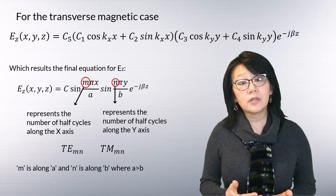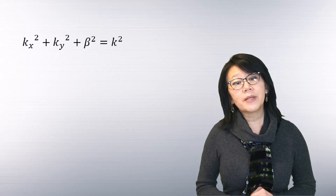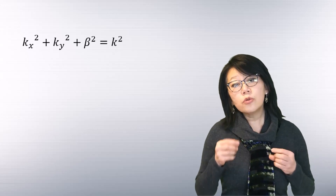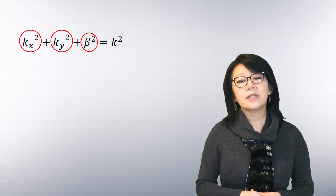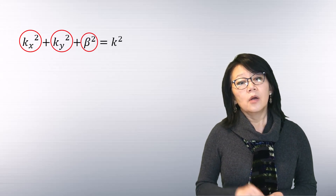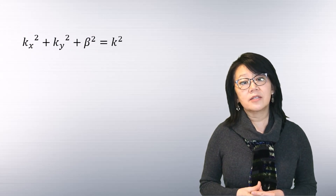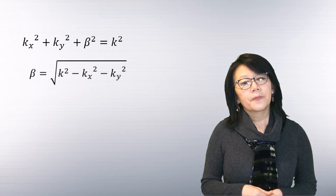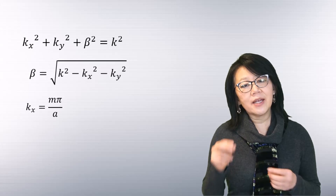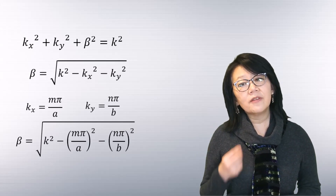The normal convention is to use the mode number along the larger dimension first, followed by the mode number along the smaller dimension. Recalling the equation relating the propagation constant to the wave numbers along the x, y, and z directions, we rewrite this equation to express the propagation constant in terms of the wave numbers kx and ky.